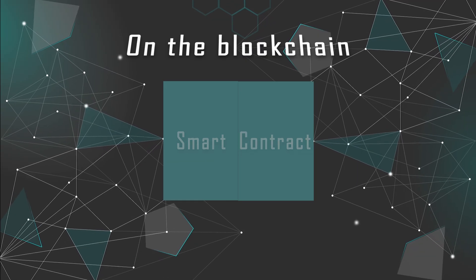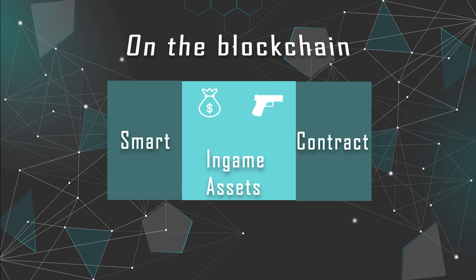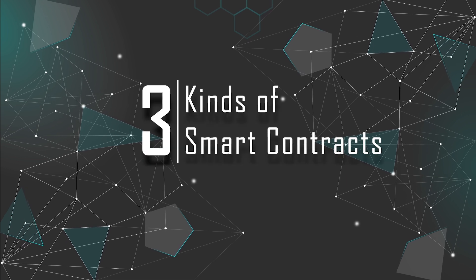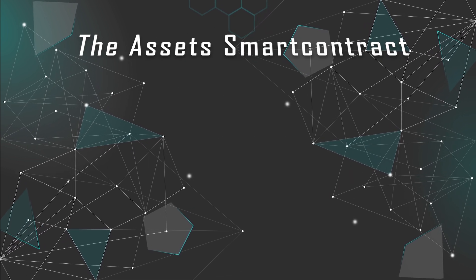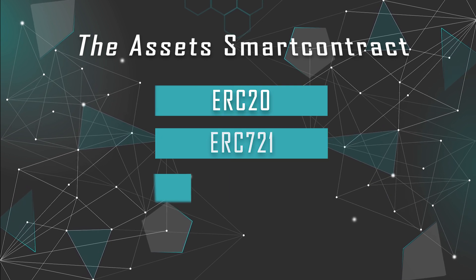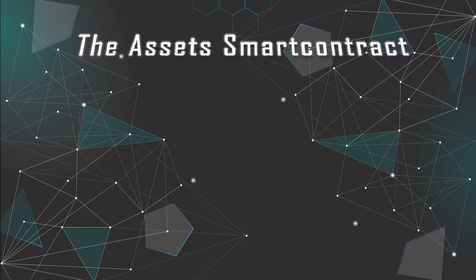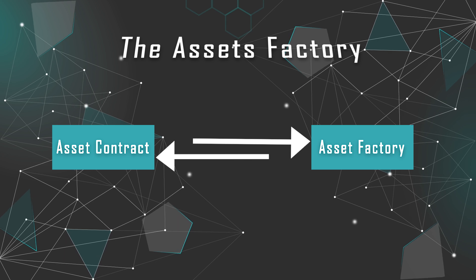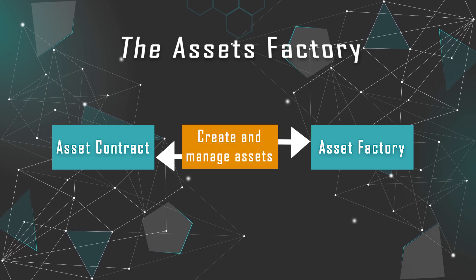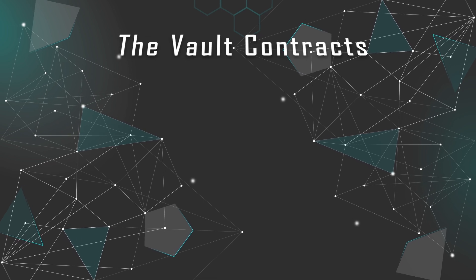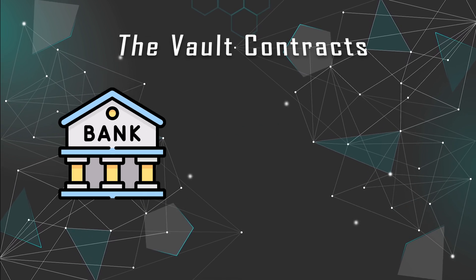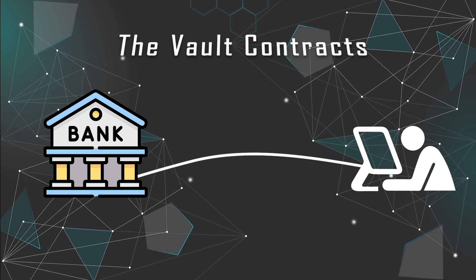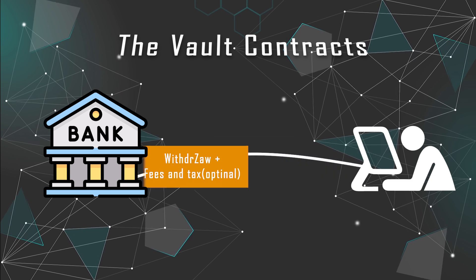We will need to build smart contracts to represent and manipulate gaming assets on the blockchain. Typically we will need three kinds of smart contracts: the asset smart contracts, usually ERC20, ERC721, and ERC1155; the asset factory smart contracts that interact with the asset contracts to create and manage assets; and the vault smart contracts to act as an ATM machine where players can deposit and withdraw their assets. A couple types of fees and tax can be added to this contract.